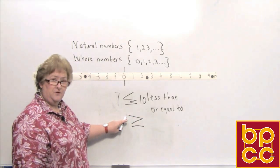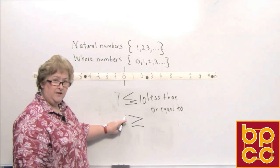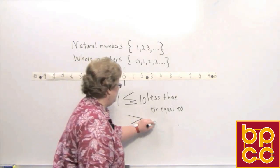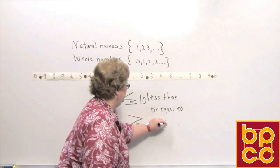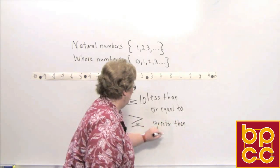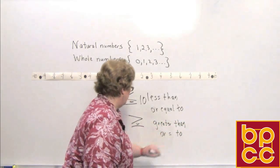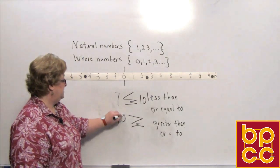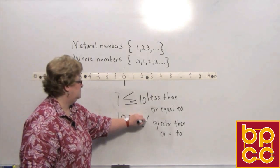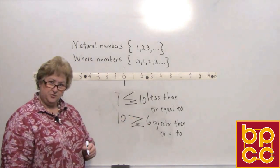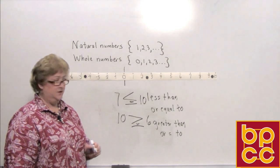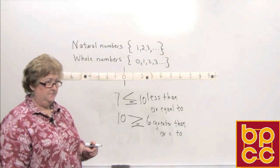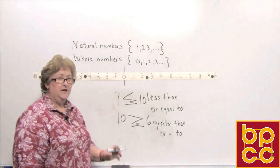For the 'greater than or equal to' symbol, the mouth is open as you read left to right. Let's say: ten is greater than or equal to six. That's a true statement — ten is greater than six according to the number line.